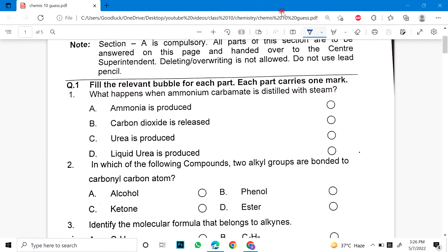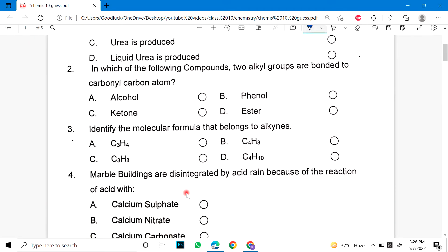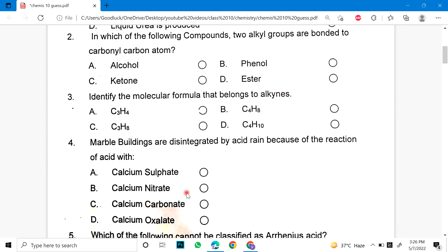What happens when ammonium carbonate is distilled with steam? Number 2. In which of the following compounds two alkyl groups are bonded to carbonyl atom? This is a functional group. Number 3. Identify the molecular formula that belongs to alkynes triple bond.